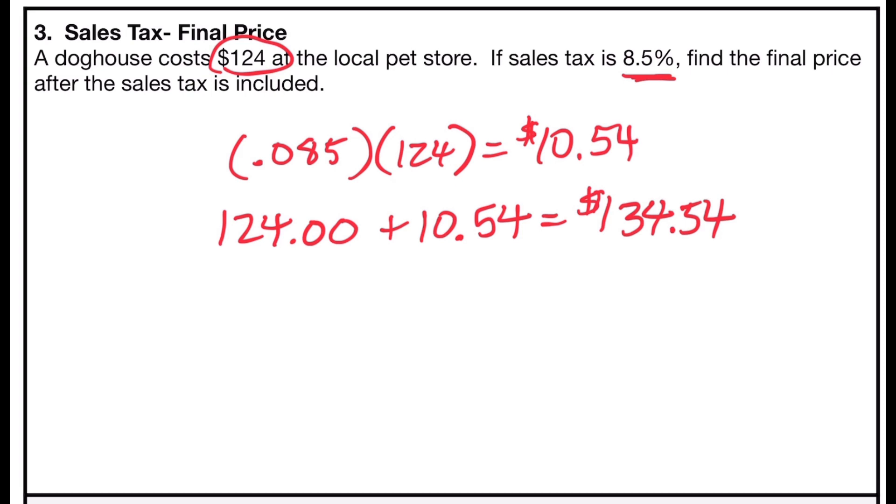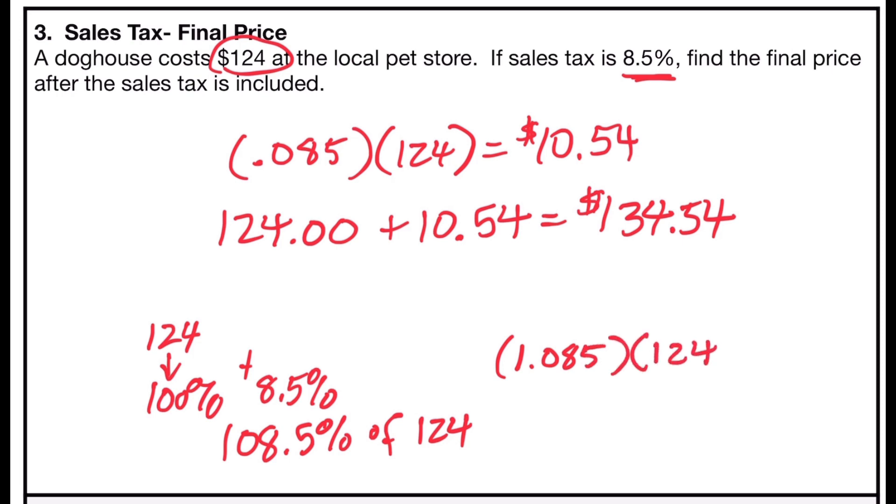Now there is a shortcut way to do this. If I think about the $124 as 100% of the price and the sales tax as 8.5% of the price, I can add those two together and find out that I would have being paid 108.5% of the price of $124, which means I could multiply 1.085 times the $124 and directly find the final price of $134.54. So you could do the problem in two steps, first finding the tax, then adding them together. Or you can add the percentages together, multiply it by the price of the dog house, and you'll find the same answer of $134.54.